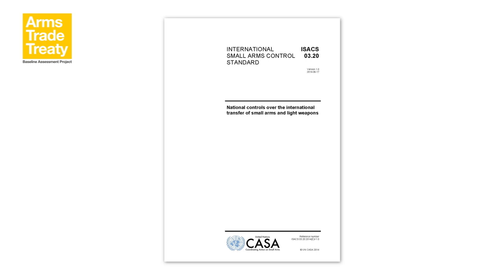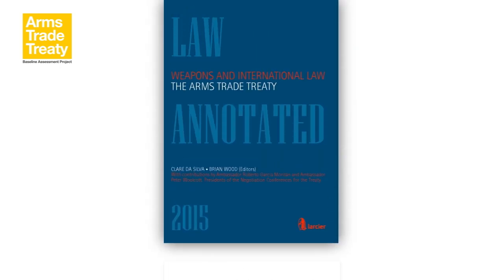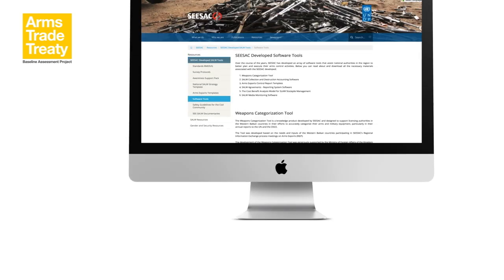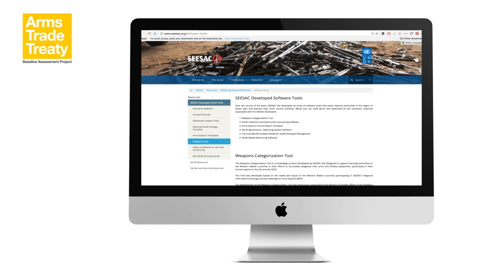Other useful sources of information for establishing reporting processes include the International Small Arms Control Standard, or ISACS, Module 320 on National Controls over the International Transfer of Small Arms and Light Weapons, available from the website of the United Nations Coordinating Action on Small Arms, or CASA. The chapter on Record Keeping in Weapons and International Law: the Arms Trade Treaty, edited by Claire de Silva and Brian Wood and published in 2015 by Lassier Press. And the Southeastern and Eastern Europe Clearinghouse for the Control of Small Arms and Light Weapons, or SEESAC, which has developed several tools to support reporting on arms transfers by Western Balkan states.